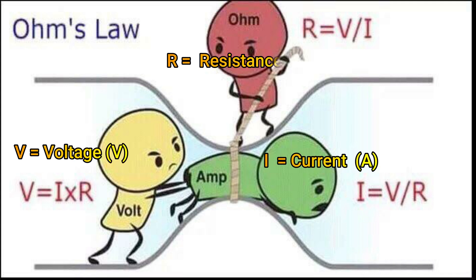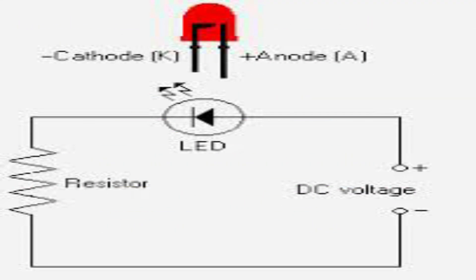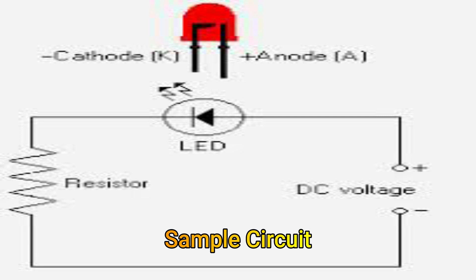V, current, I, at resistance, R — ito yung mga formula nila. Ito yung sample circuit na mayroon tayong DC voltage, yun yung voltage source, LED at resistor.